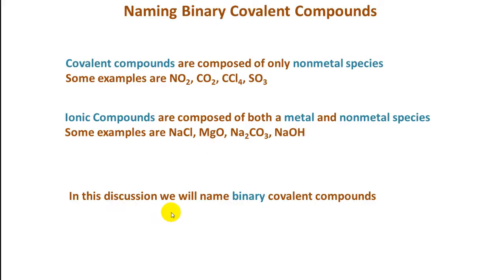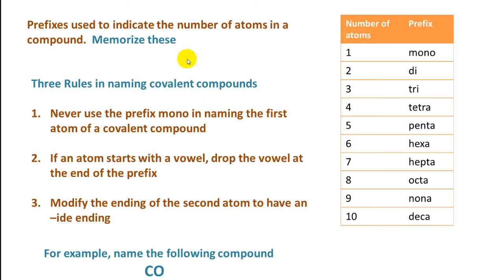In this discussion, we will name binary covalent compounds. Binary covalent compounds are typically formed by the combination of two non-metals. So let's take a look at how we name them. We have a table here with prefixes, and these prefixes are used to indicate the number of atoms in the compound.